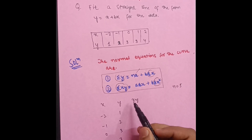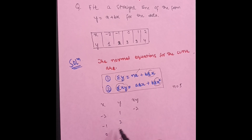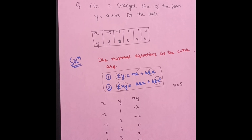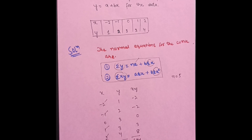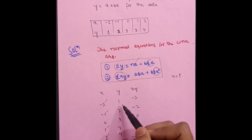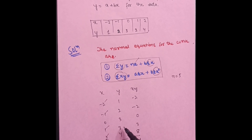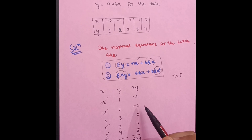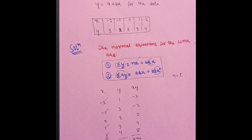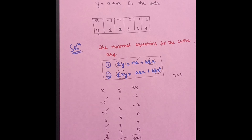For the xy column: (-2)(1) = -2, (-1)(2) = -2, (0)(3) = 0, (1)(3) = 3, (2)(4) = 8. Now compute the summations: Σx = 0 (since -2 and +2 cancel, -1 and +1 cancel). Σy = 1+2+3+3+4 = 13. Σxy = -2 + (-2) + 0 + 3 + 8 = 7.